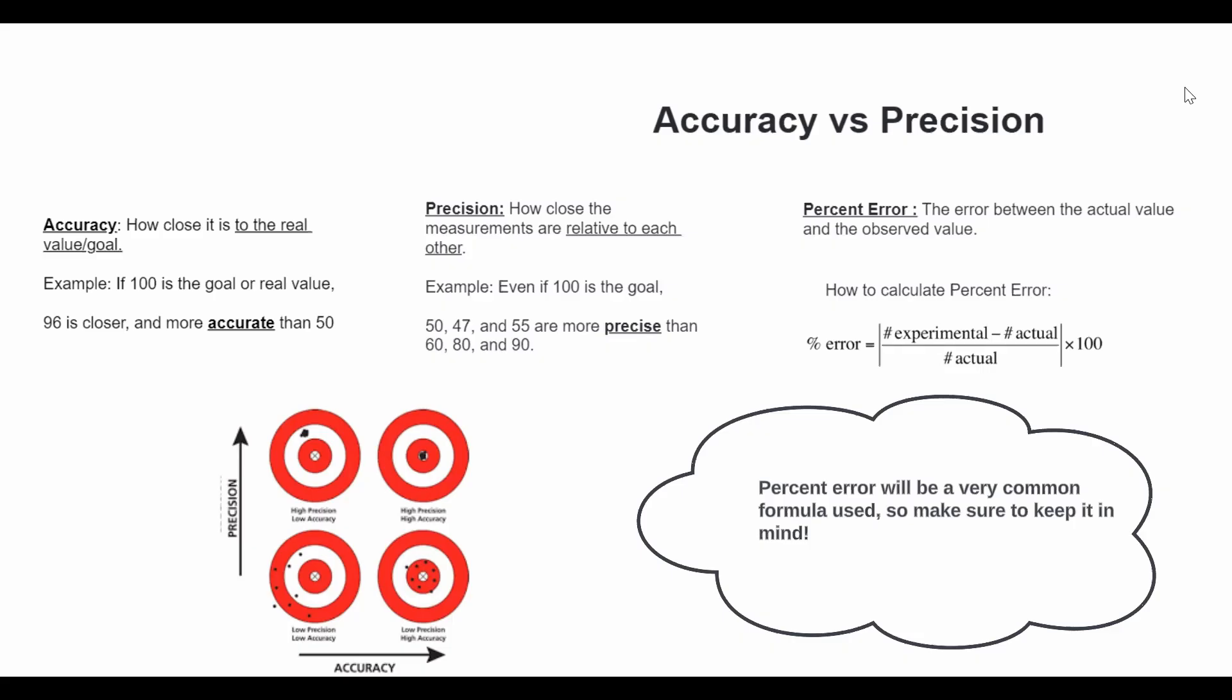Looking at the target graphs below, on the left side, the points are very far away from the center of the graph. That's why you have low accuracy. On the right side, the points are more centered and that's why you have higher accuracy.